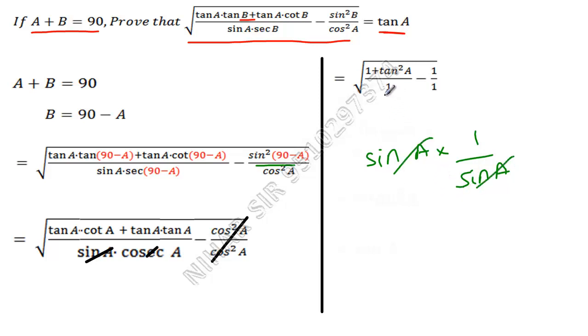Now LCM is 1, so this will be 1 plus tan²A minus 1 upon 1. Now this positive 1 and this negative 1 cancel. And that's okay if we don't write 1 as denominator because it will not change the value. So we are left with tan²A. Now this square root and this square are removed, so that is tan A, and that's proved.